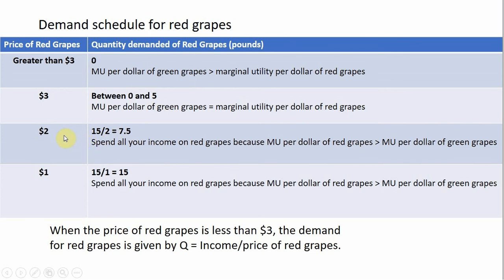If the price of red grapes is $2 — less than $3 — the consumer will spend all $15 on red grapes. 15 divided by 2 gives 7.5 pounds of red grapes, a point on the consumer's demand curve. If the price is $1, you can buy 15 pounds of red grapes. Notably, when the price of red grapes is less than $3, the quantity demanded equals income divided by the price of red grapes. That's the equation for the consumer's demand curve for any price below $3.